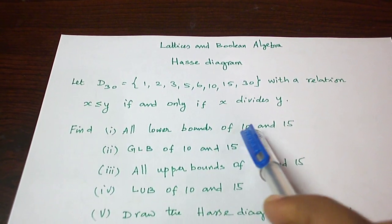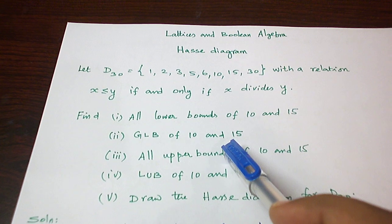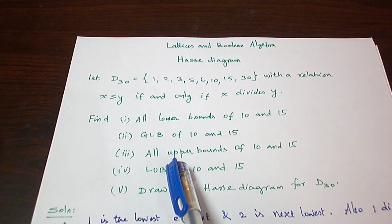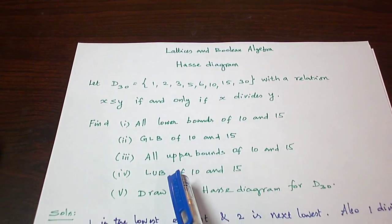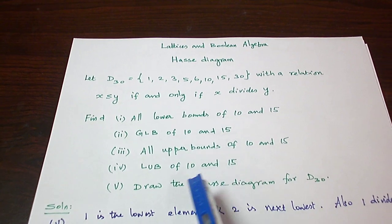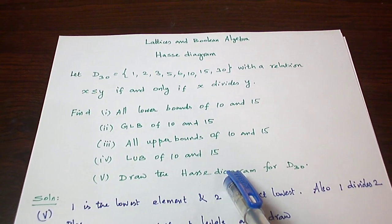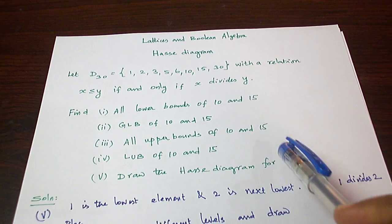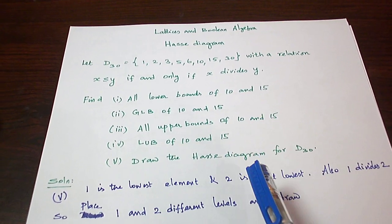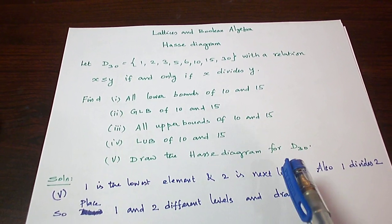We are asked to find all the lower bounds of 10 and 15, the greatest lower bound of 10 and 15, all the upper bounds of 10 and 15, the least upper bound of 10 and 15, and we are also asked to draw the Hasse diagram for D30. First of all, let us draw the Hasse diagram for D30.